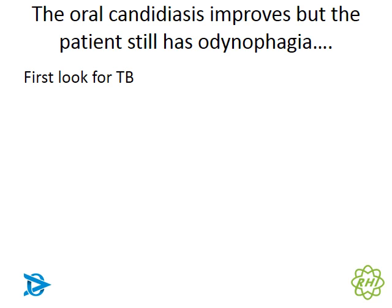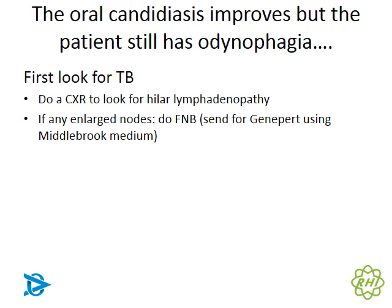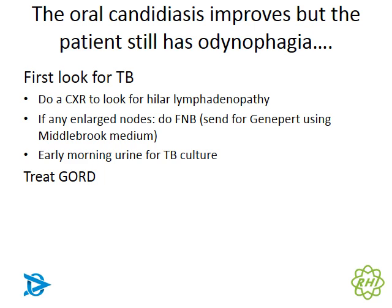If TB hasn't been excluded, look for it now — do an X-ray and look for enlarged nodes. If enlarged nodes are found elsewhere, do a fine needle biopsy. Small Middlebrook Medium bottles available from the NHLS can be used to rinse the needle after FNA, and the sample can be sent for GeneXpert and TB culture. For disseminated TB where sputum culture is difficult, an early morning urine sample has quite good yield.